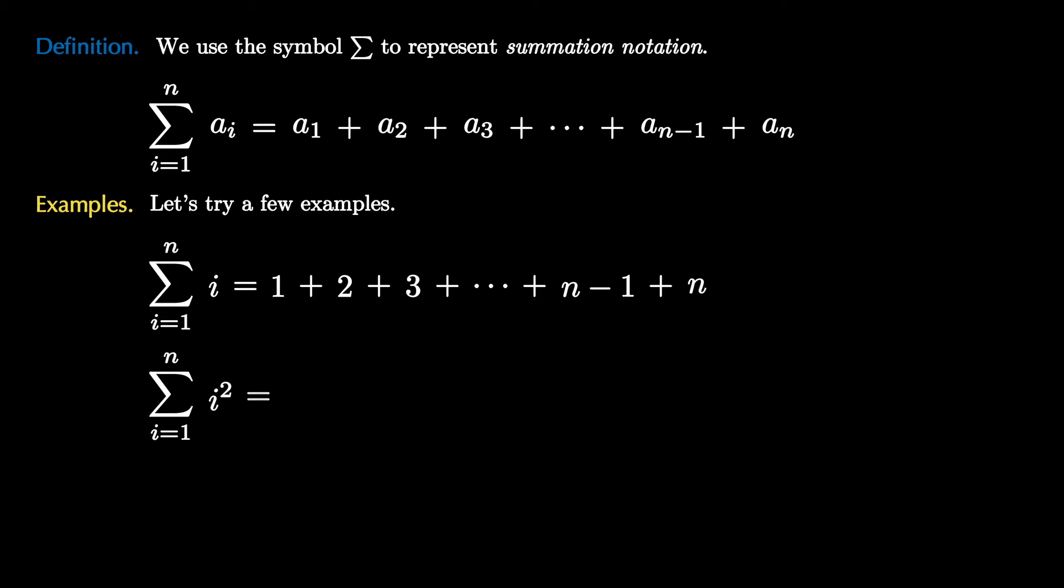For our second example, let's consider the sum of i², where i ranges from 1 to n. Again, the sigma means we're going to add up a bunch of terms, and we're going to go stage by stage. When i is 1, we add 1 squared. When i is 2, we add 2 squared. When i is 3, we add 3 squared. When i is n minus 1, we add the quantity (n minus 1) squared. And for the final sum, i is equal to n, so we add n squared. This represents the sum of squares of the first n positive integers.